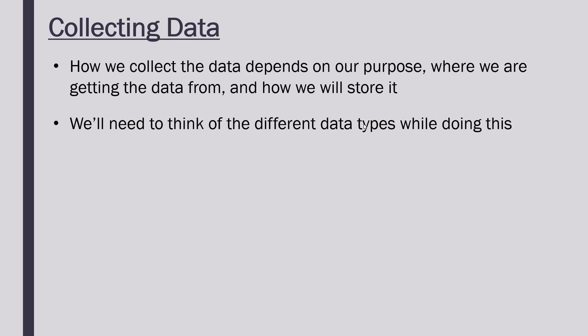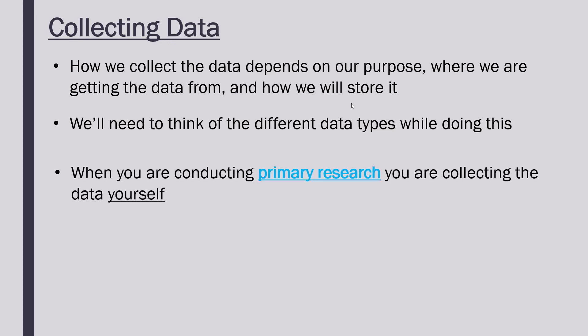As we go through we'll also need to think about the different data types involved and what kinds of data we're going to be collecting, because that will depend on our method and how we intend to use it. Before we start we need to introduce two key terms. The first one is primary research — when you are conducting primary research you are collecting the data yourself.